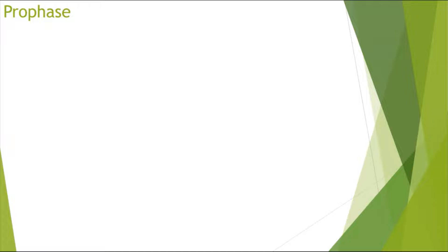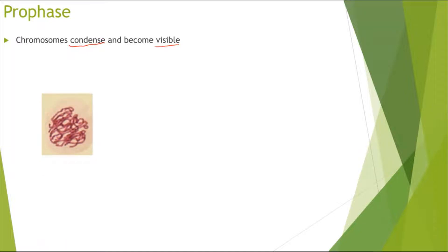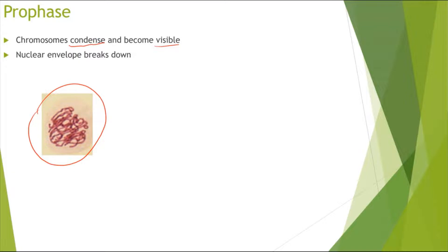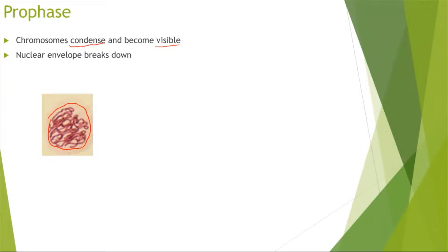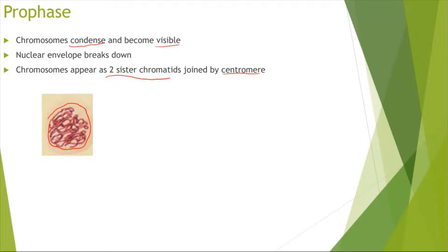The first stage of mitosis is prophase. In prophase, the chromosomes condense — they become thicker and this makes them visible. The chromosomes were invisible in interphase, but now they are becoming visible, as you can see in the micrograph. The nuclear envelope also breaks down. In prophase, the chromosomes appear as two sister chromatids joined at the centromere.